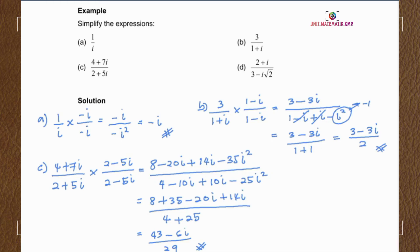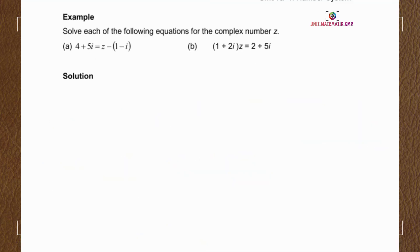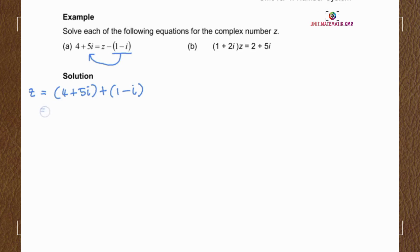Now you can try Example D. For the next section: solve each of the following equations for the complex number z. For Example A, bringing 1 minus i to the left-hand side, we get z equals 4 plus 5i plus 1 minus i. To add two complex numbers we add like terms: 4 plus 1 gives 5, and 5i minus i gives 4i, so z equals 5 plus 4i.